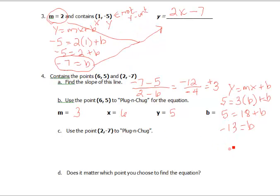And that would give us y equals 3x plus b, which in this case is negative 13.